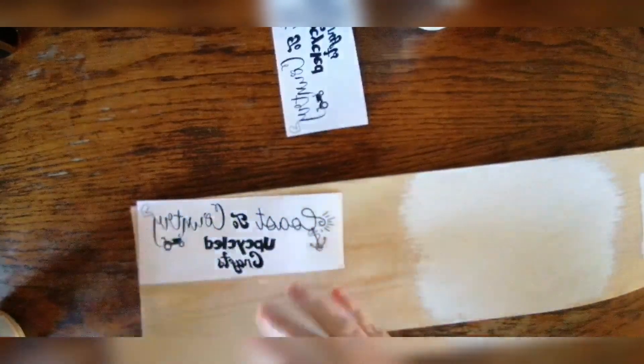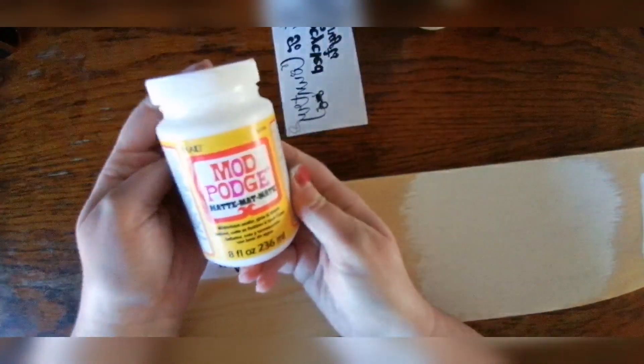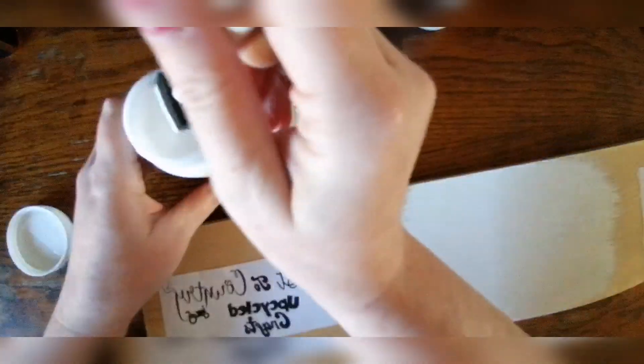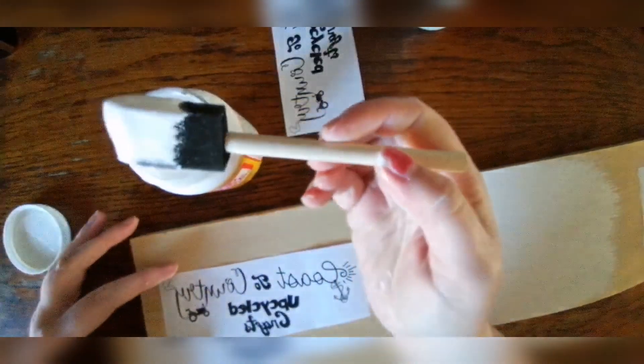Now on this next side I am going to use the Mod Podge Matte which I use quite a lot for my graphics transfers. This glue I absolutely love. I prefer the matte to the gloss finish especially on antique designs.